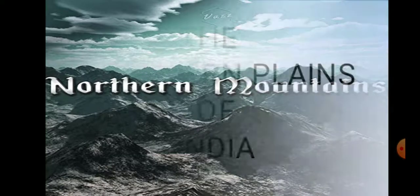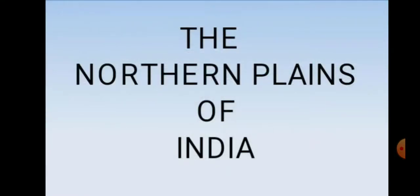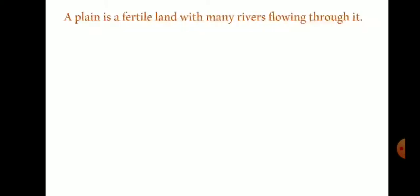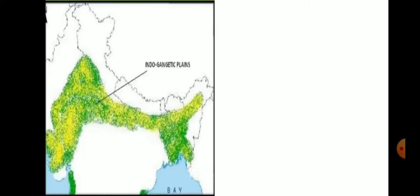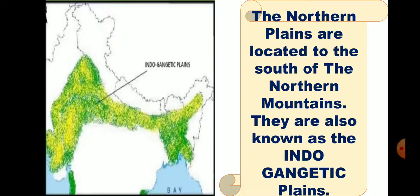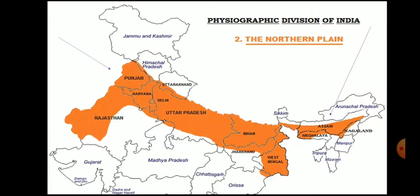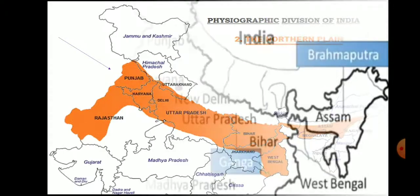Now, let us start with the second physical division, the Northern Plains. What do you mean by plain? A plain is a fertile land with many rivers flowing through it. The Northern Plains are located to the south of the Northern Mountains. They are also known as the Indo-Gangetic Plains. They extend from Punjab in the west to Assam in the east, covering a distance of about 2400 kilometers.